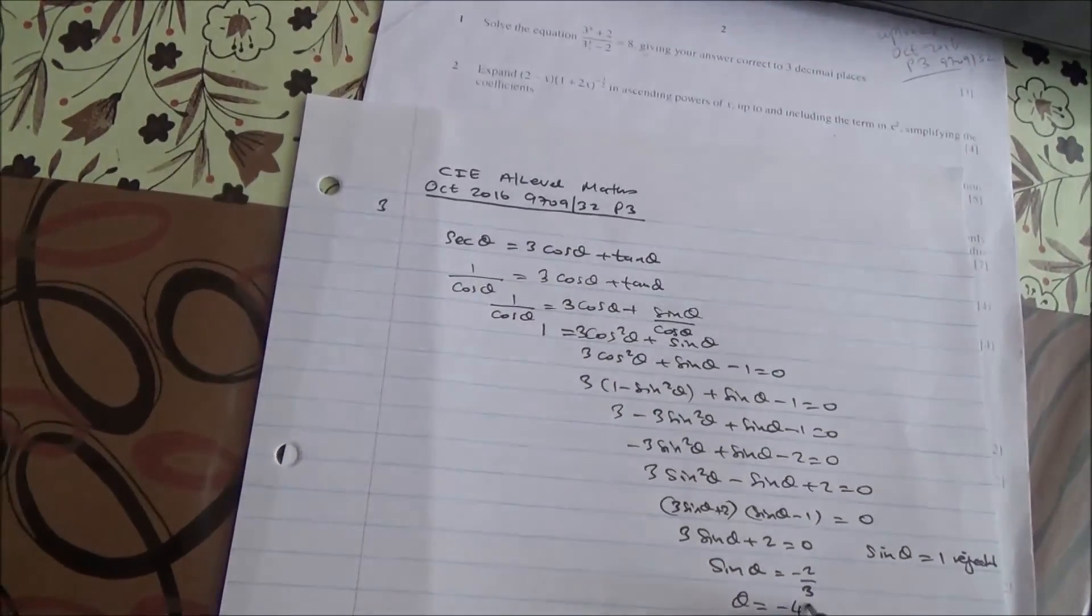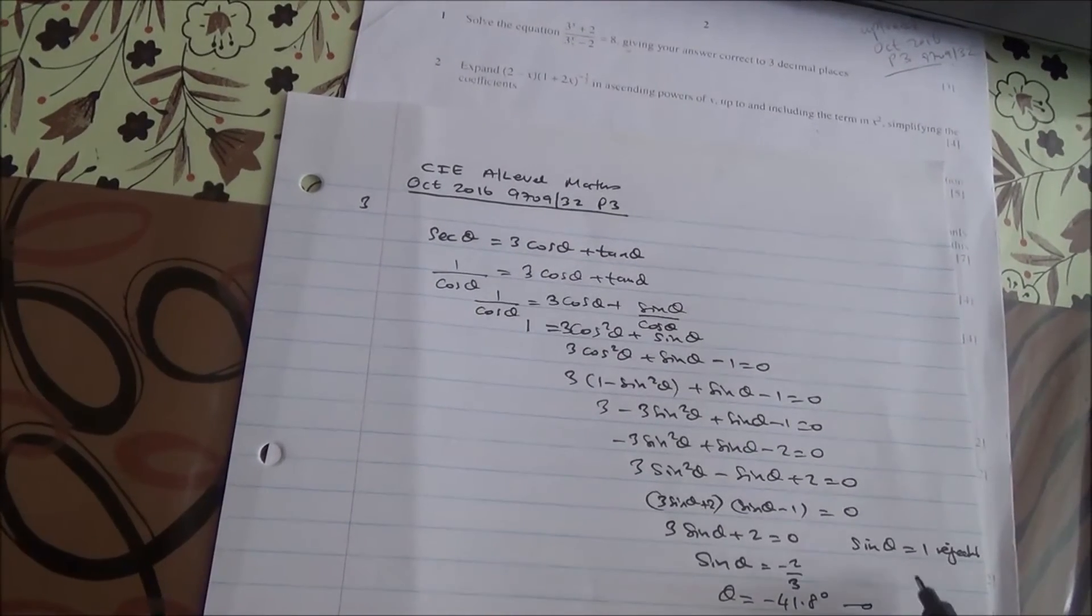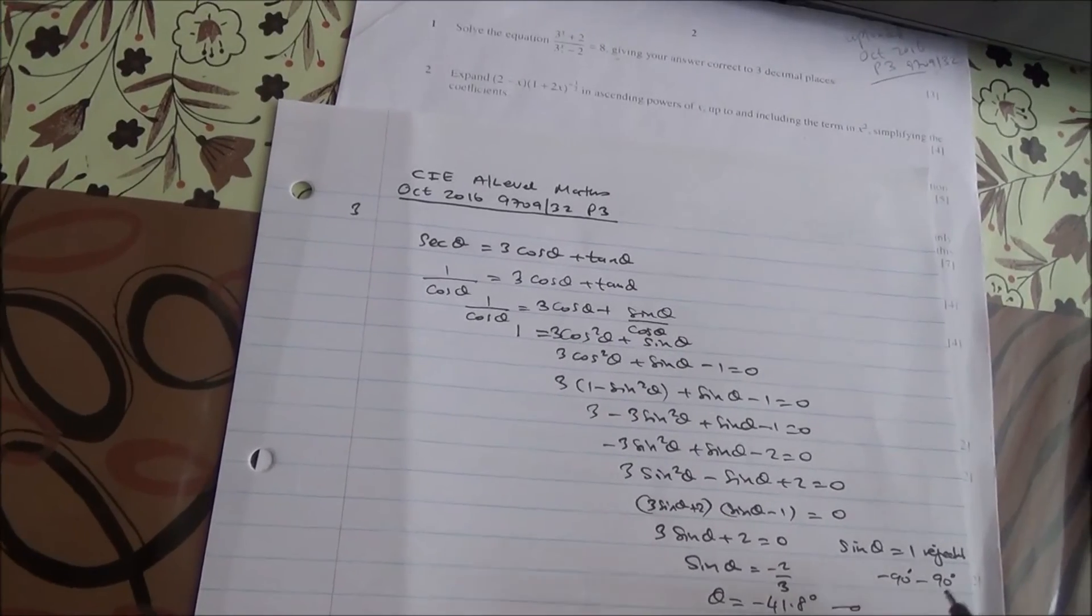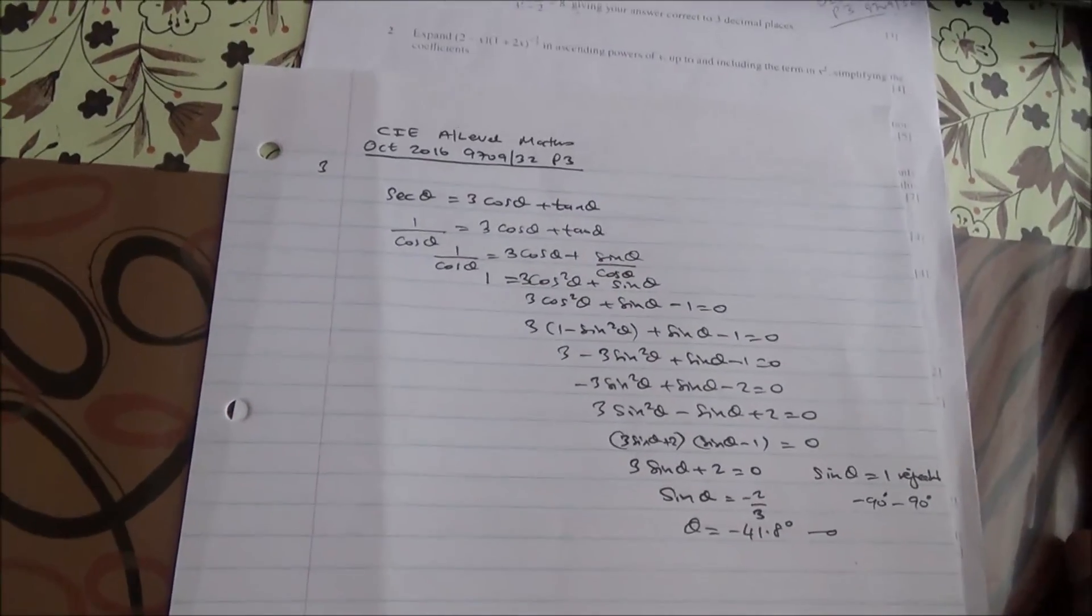So this is the only value we have. The other solution is rejected because θ = 90° is excluded from the valid range. Okay, take care.